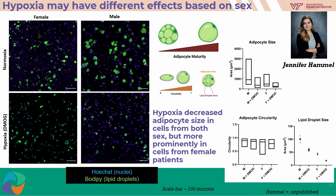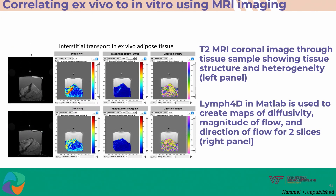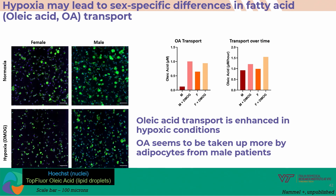We are now comparing female to male cells. Hypoxia decreases adipocyte size in cells from both sexes, but more prominently in cells from female patients. Lipid droplet size is also very much decreased in cells from female patients exposed to hypoxia. We also see that this affects how fatty acids are trafficked through the tissue: when we apply oleic acid, a fatty acid, more of it is taken up by male cells, and oleic acid transport is enhanced in hypoxic conditions. So lipid trafficking differs between these groups.